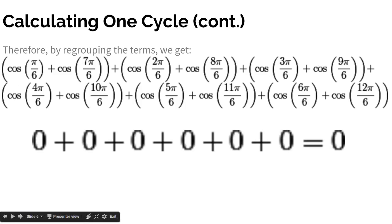This gives us, well, since each group cancels out to 0, we have 6 groups, and that means we have 6 zeros, and anything times 0 is 0. So we just get 0. So the sum of the first 12 terms, the sum of one cycle, is 0.